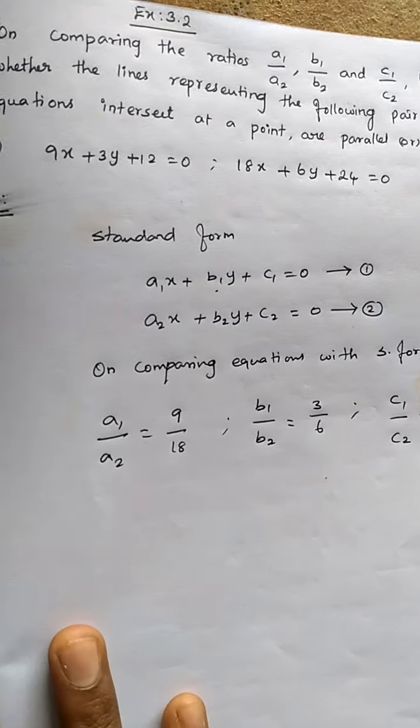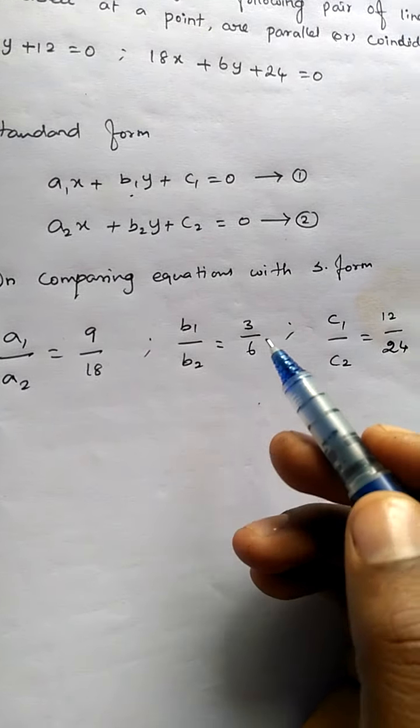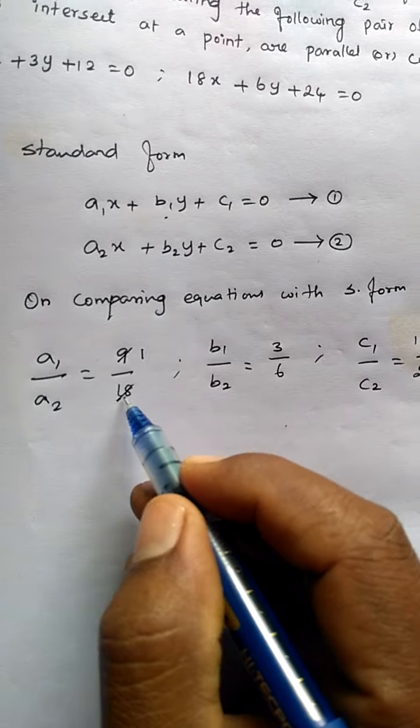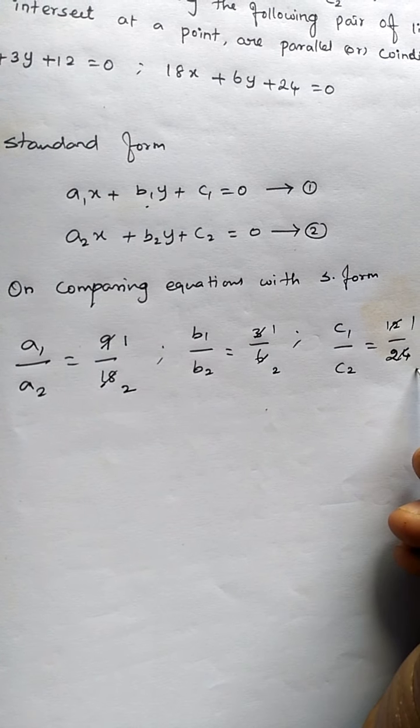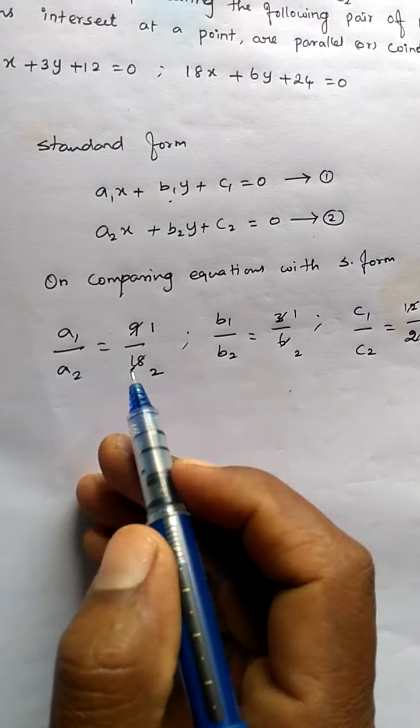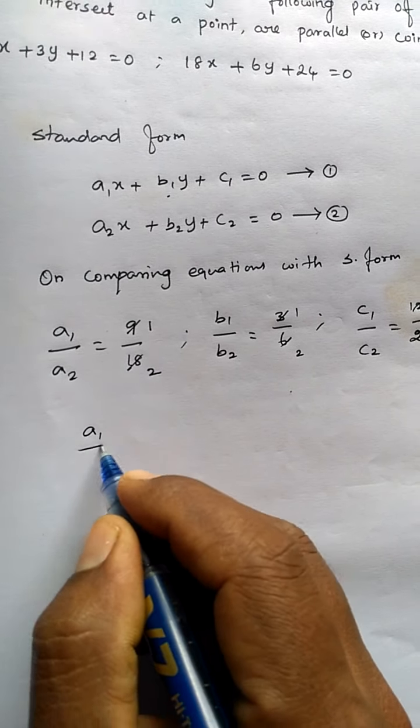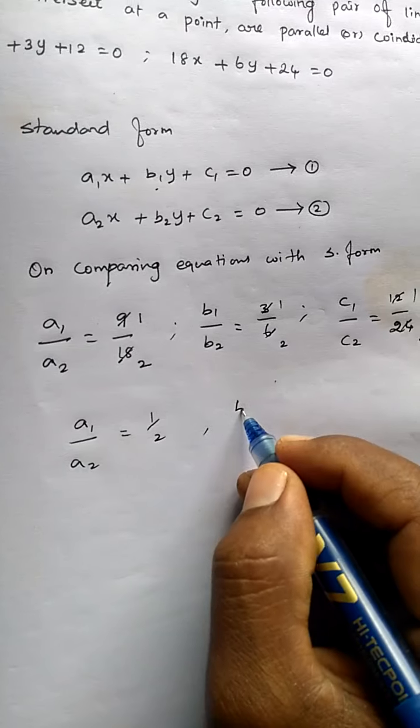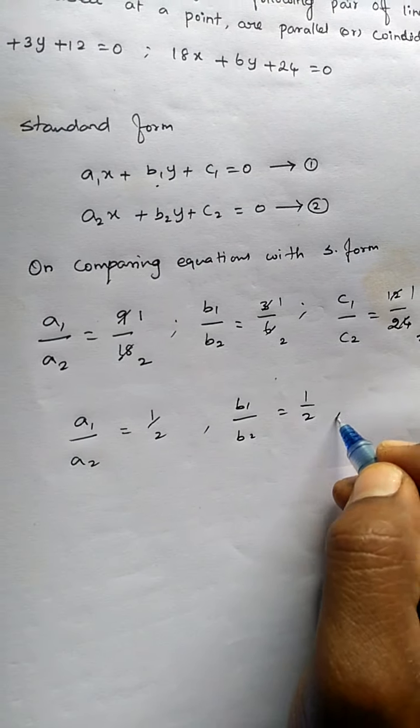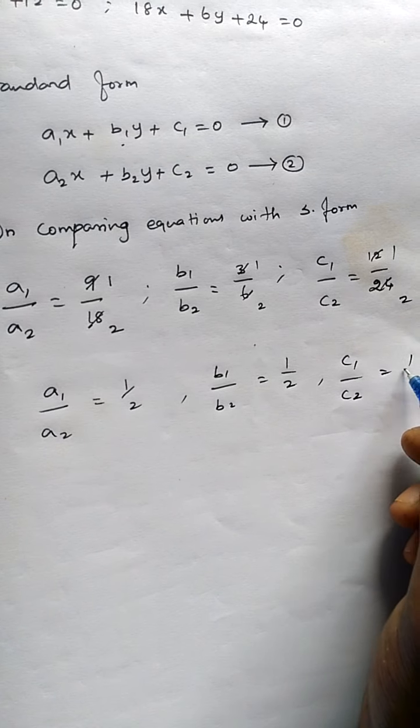Before applying that, if any cancellation is there, we have to cancel, then only we can say what kind it is. Now see, 9 by 18 is 1 by 2, 3 by 6 is 1 by 2, 12 by 24 is 1 by 2. Now all the ratios are 1 by 2. Therefore, we can say a1 by a2 is 1 by 2, b1 by b2 is 1 by 2, and c1 by c2 is also 1 by 2.